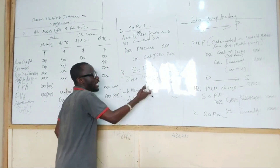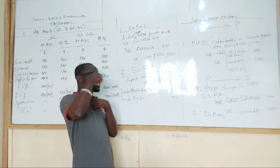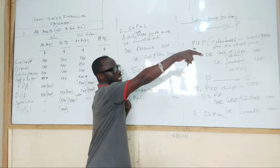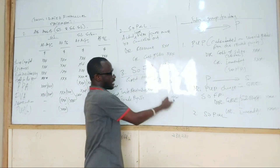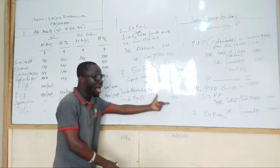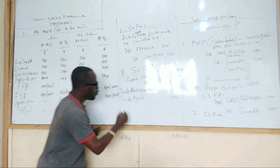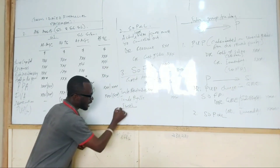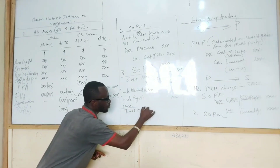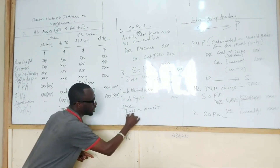Why wouldn't the accounts be the same? The parent might think the subsidiary owes them two thousand, while in the subsidiary's books they think they owe the parent five hundred. That can happen because of two reasons: goods in transit, and cash in transit.